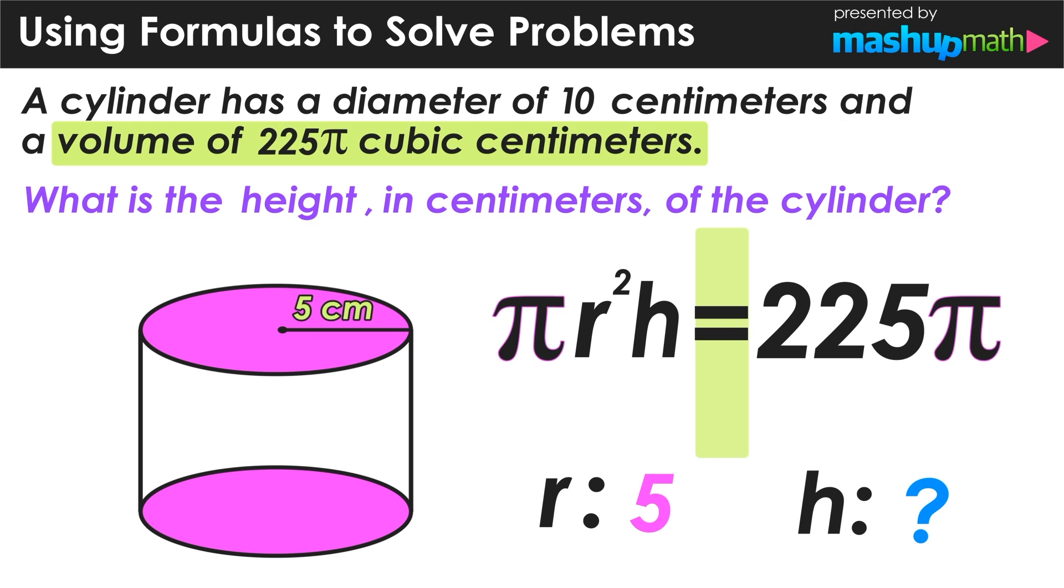Now we should notice that we have a pi on both sides of the equal sign. Now we can actually divide by pi on both sides to effectively cancel these out from either side of the equation.